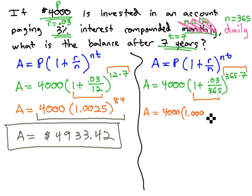1.000082192 to the 365 times 7 power, which is 2,555.